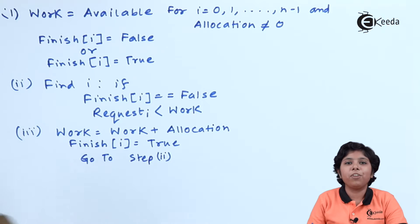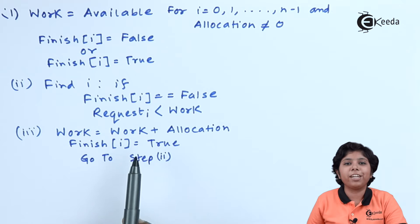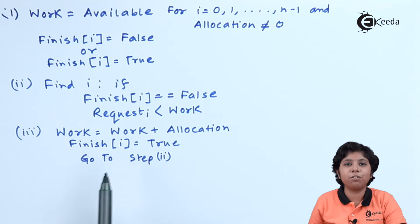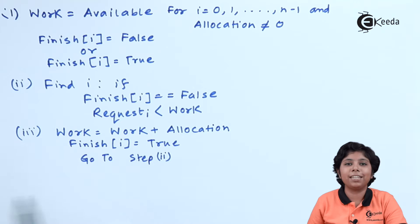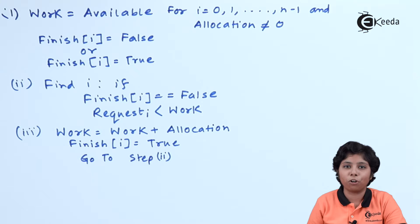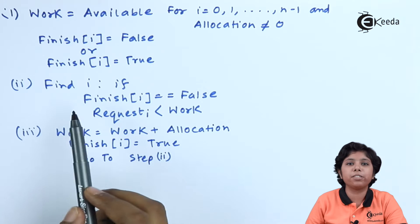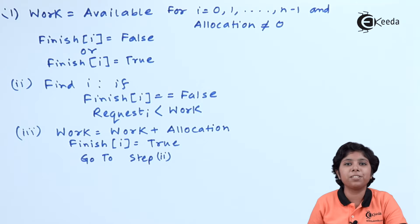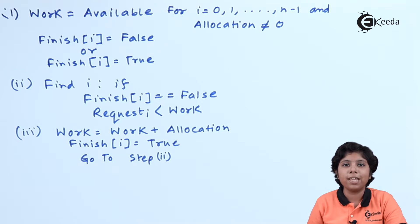In step 3, we deallocate all resources from process Pi that has executed, setting finish[i] = true, and add its allocation back to the available matrix. Then we go back to step 2 to find another process if one exists in the system. If no such process is found, we go to step 4.